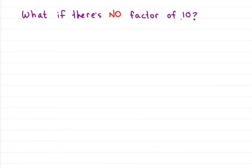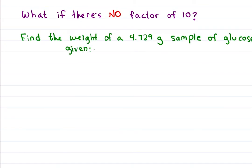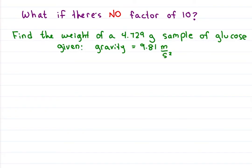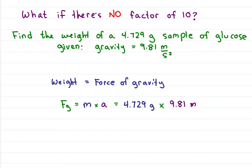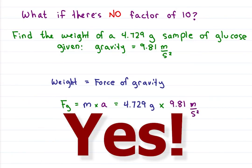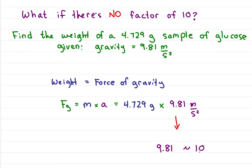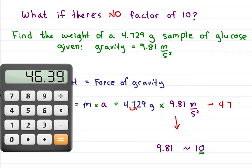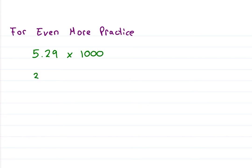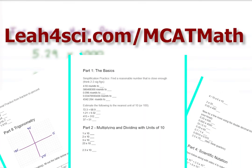What if there's no factor of 10, such as the MCAT asking you to find the weight of a 4.729 gram sample of glucose given that the gravitational acceleration is 9.81 meters per second squared? I cover gravity in my physics series below, but the math here is 4.729 times 9.81. Can we still use the trick without any 10s? Actually yes, because on the MCAT close enough is good enough and rounding is your best friend. 9.81 is about 10 and 10 has a 0. Grab that decimal, move it one space to the right, and we get an answer that is approximately 47. Calculator says 46.39, which is close enough. How about 5.29 times 1000 or 3.27 times 9.73? Practice questions like these on my MCAT math worksheet at leah4sci.com slash MCAT math link below.